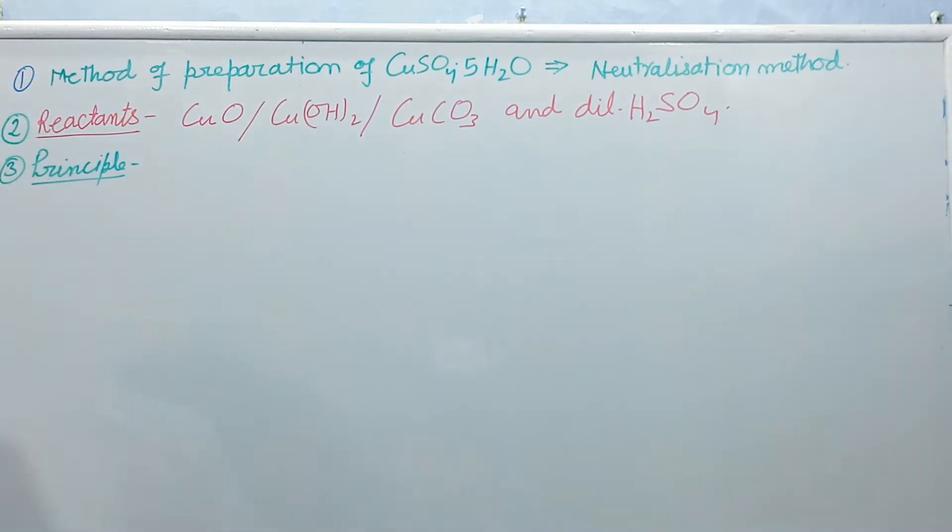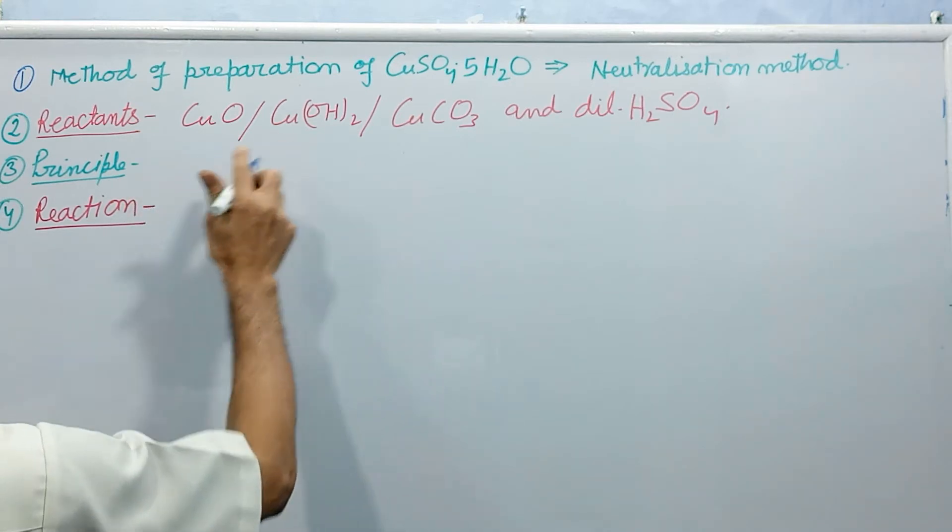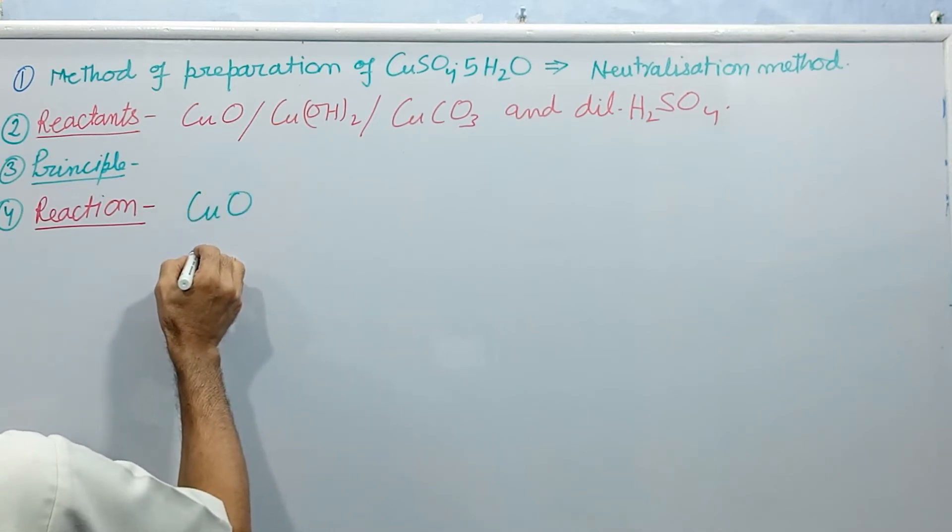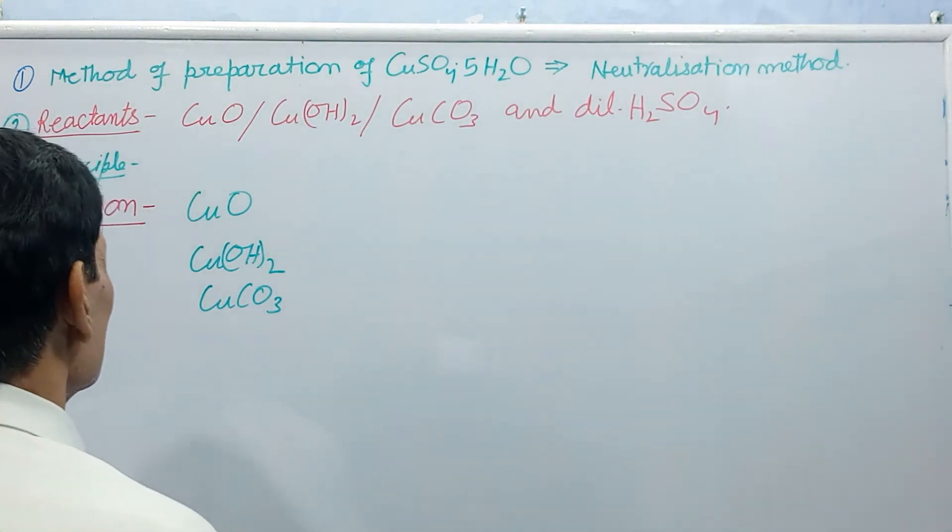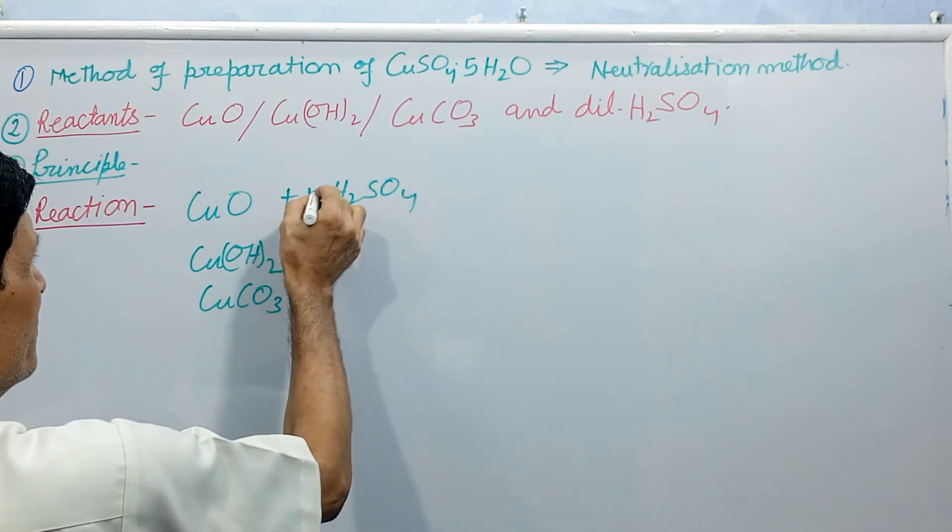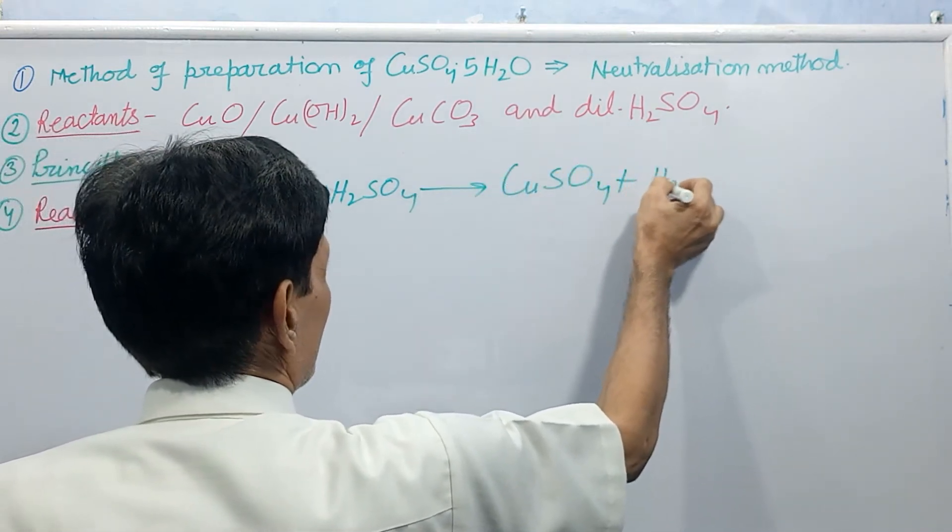Now, let us see fourth point, chemical reaction. In the reaction, I am telling you, first, these neutralize insoluble base - copper oxide. Next one, copper hydroxide, if you are taking. And next one, copper carbonate, if you are using. Any one of that, we can use plus dilute sulphuric acid in dilute form, remember, gives CuSO4 plus H2O.